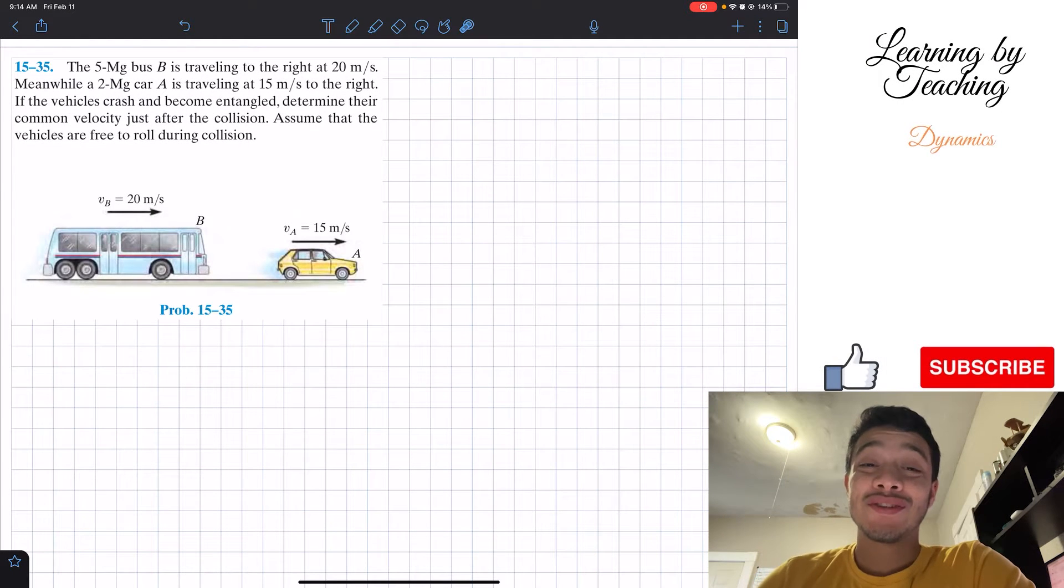Welcome back everyone to Learning by Teaching. Today we're in dynamics and we're going to solve problem 15.35. The 5 megagram bus B is traveling to the right at 20 meters per second. Meanwhile, a 2 megagram car A is traveling at 15 meters per second to the right. If the vehicles crash and become entangled, determine their common velocity just after the collision. Assume that the vehicles are free to roll during collision.